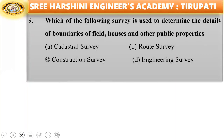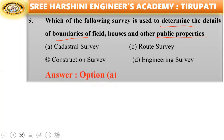Ninth question: which survey is used to determine the details of the boundaries of fields, houses and other public properties? Options: cadastral survey, route survey, construction survey, engineering survey. The answer is cadastral survey — it is used to determine the details of boundaries of fields, houses and other public properties.